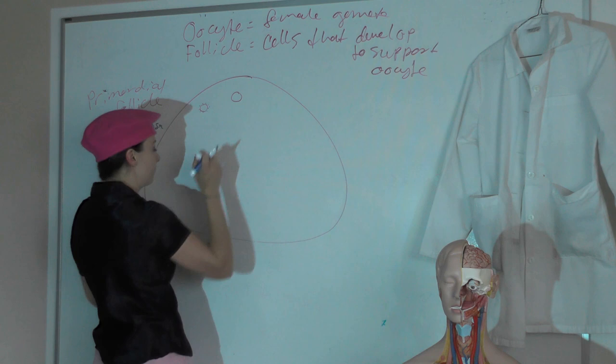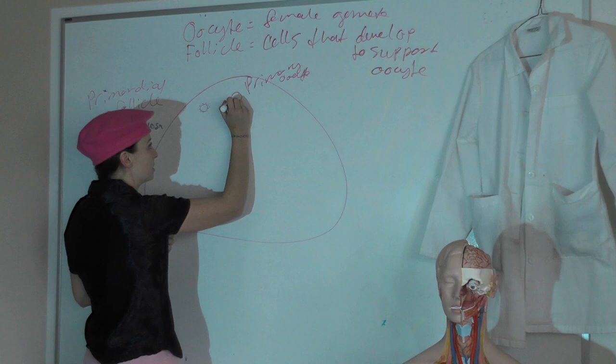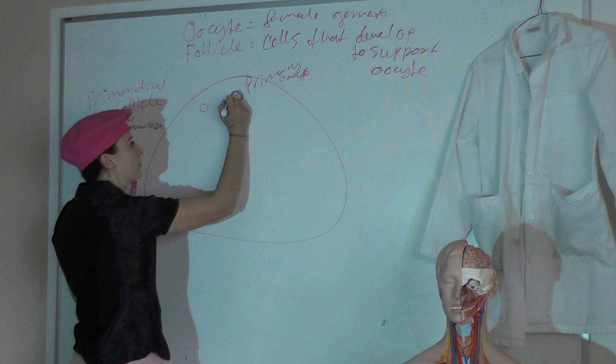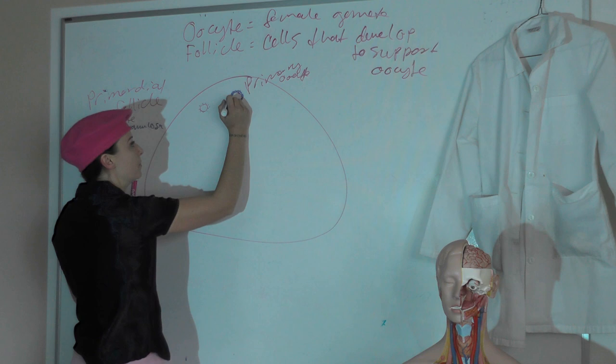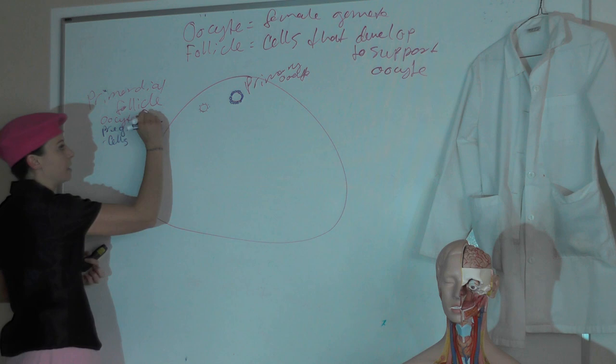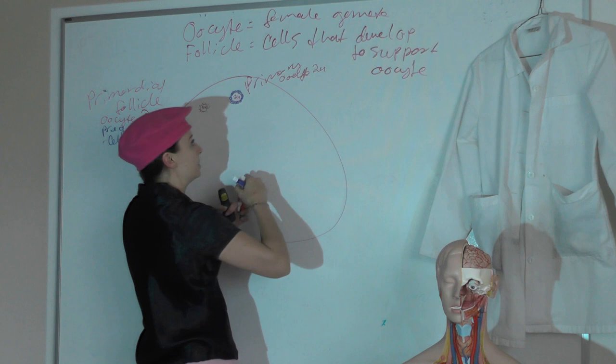We also have primary follicles. In a primary follicle we have our oocyte and still just one layer of pregranulosa cells, but they're starting to respond to FSH so they're a little bigger than in our primordial follicle. The primordial follicle is actually developed in utero — a female is born with all the oocytes she'll ever have, arrested in development at this primordial follicle stage. The oocyte is still diploid; it hasn't completed meiosis. These primary oocytes are still 2N, with really only one layer of pregranulosa cells.